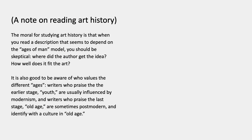A note on encountering these things in art history: when you read a description that seems to depend on this ages of man model, you should be skeptical — ask yourself where the author got that idea, originally from descriptions like Winckelmann's of ancient Greek art or Renaissance art, and how well it fits the art in question. It's also good to be aware of who has valued the different ages. Writers who praise the earlier stages — youth and adolescence — have usually been influenced by modernism, and writers who praise the last stage, old age, have sometimes been postmodern and identified with a culture in old age. To a certain extent, you have to be in a culture that seems similar to the stage in order to get really interested in that stage.